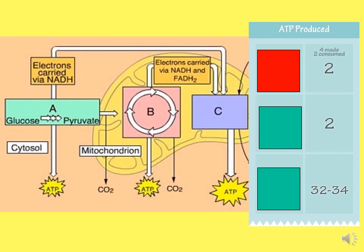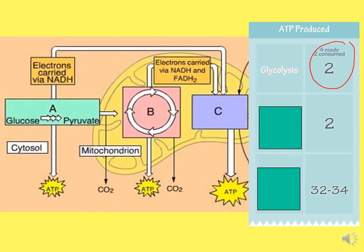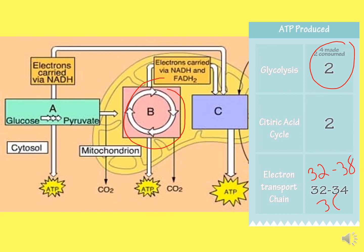Here is the cycle summary. Glycolysis is the first step: two ATP are consumed, four are made, giving a net of two. The citric acid cycle makes two more. The last step, the ETC, produces 32 to 34, and we generally average 36 total.